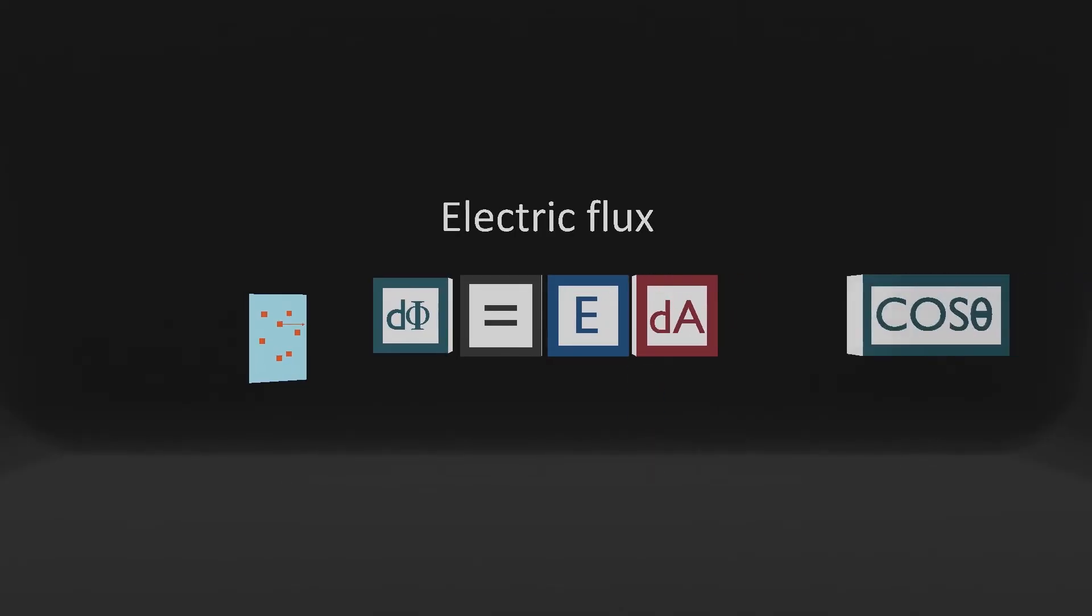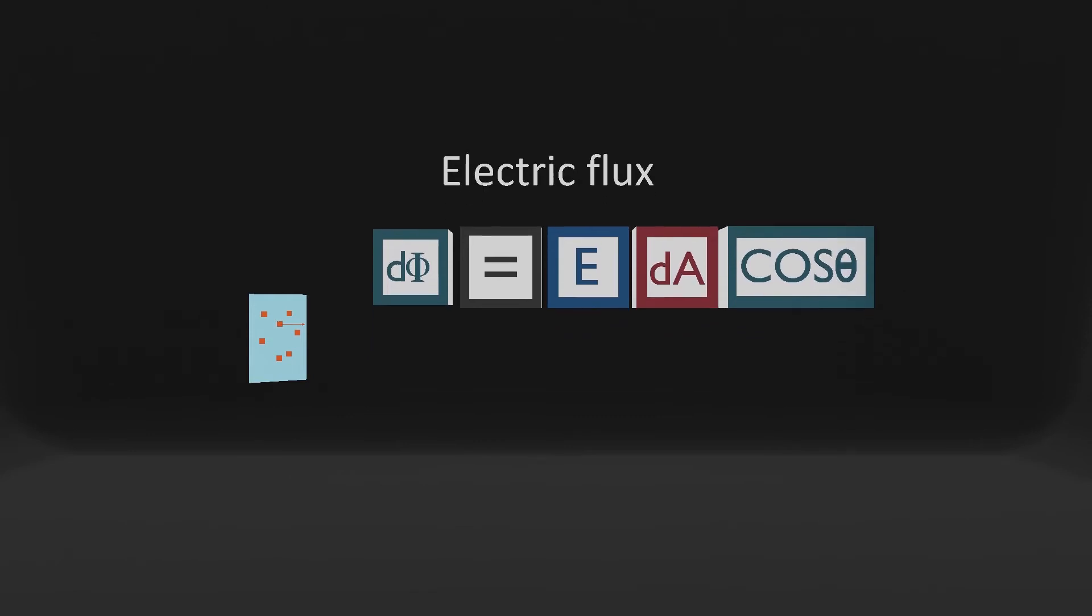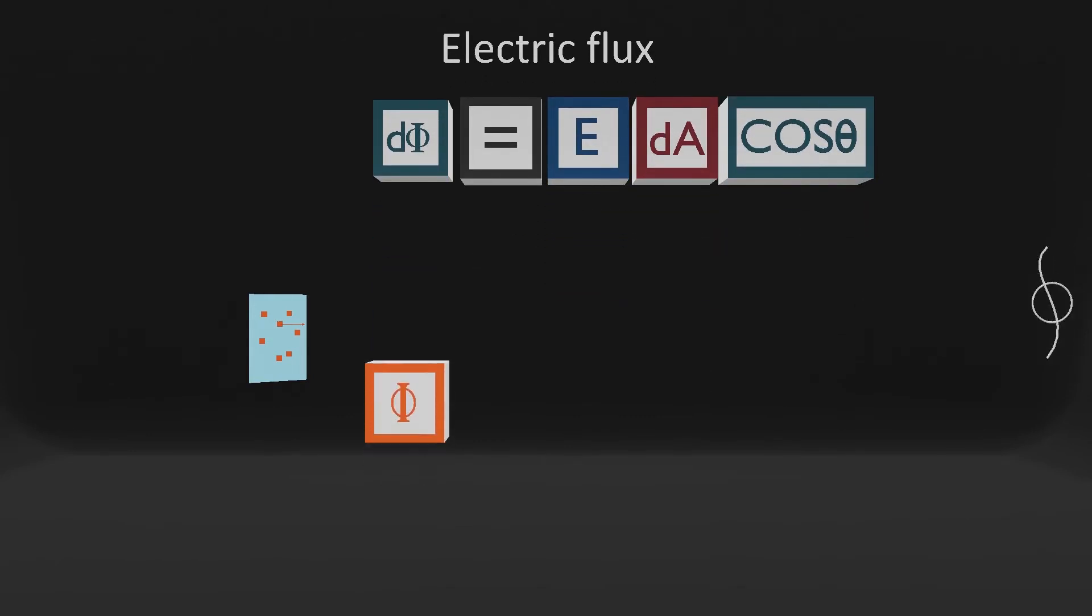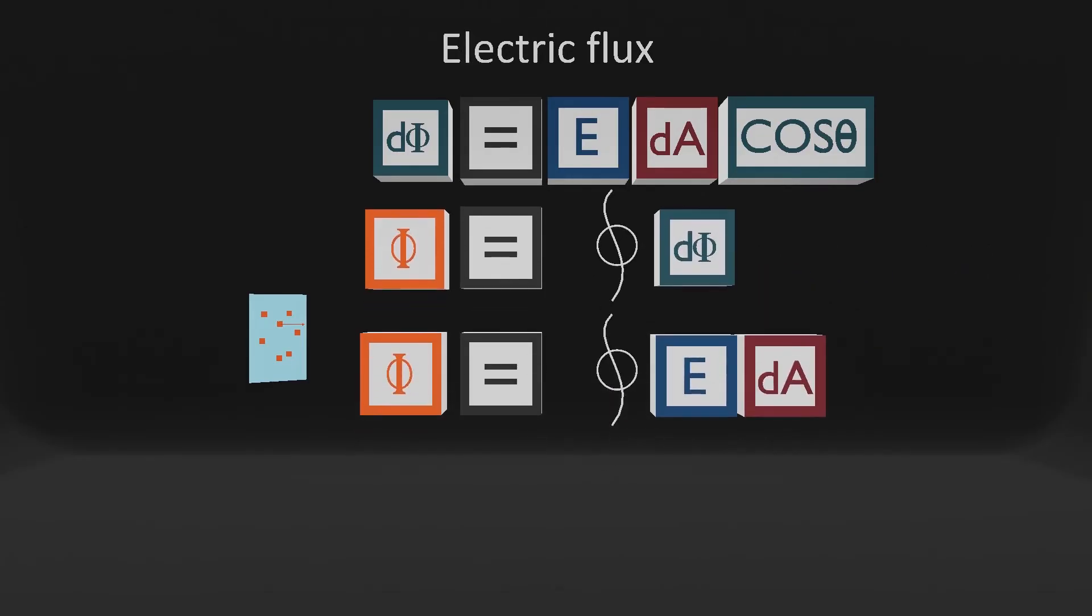When we simplify it, we get the cosine angle, which is the angle between the electric field and the area vector. The total flux is equal to the integral of dot product or the integral of electric field and area vector.